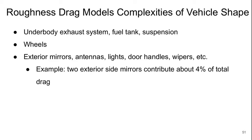Roughness drag models the complexities of the vehicle shape — the details of the underbody exhaust system, fuel tank, suspension, wheels, mirrors, antennas, lights, door handles — all the stuff that makes the shape not be smooth.